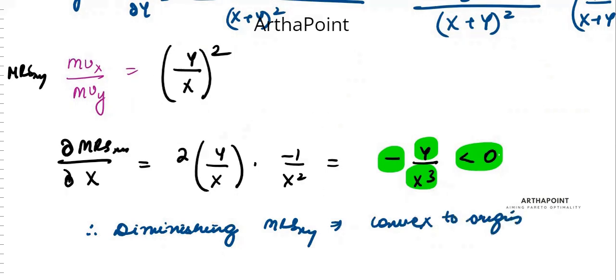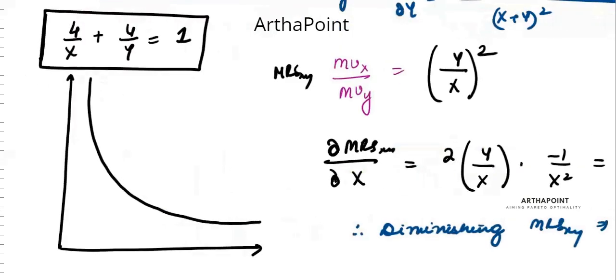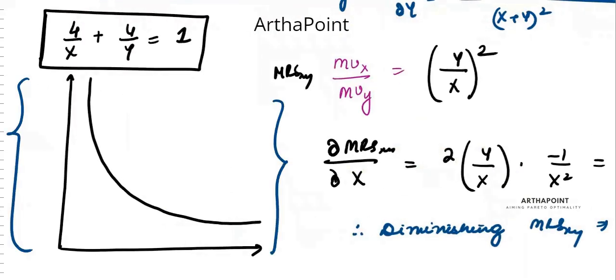That was actually clear from here only — that the ICs would be convex to the origin. Thank you.